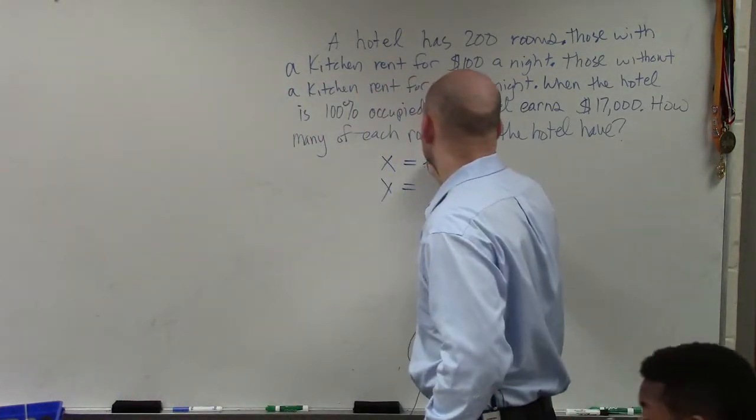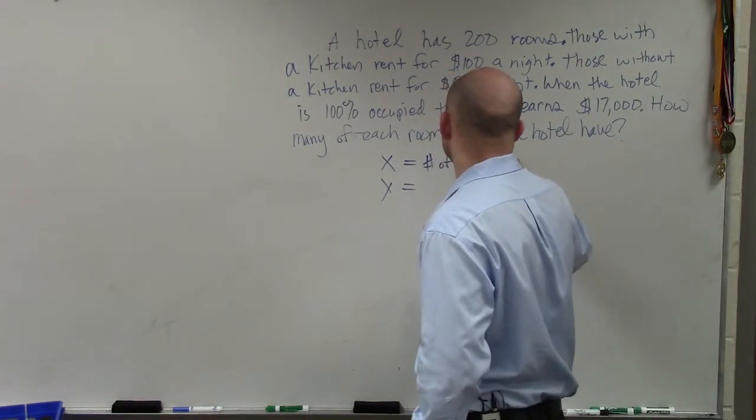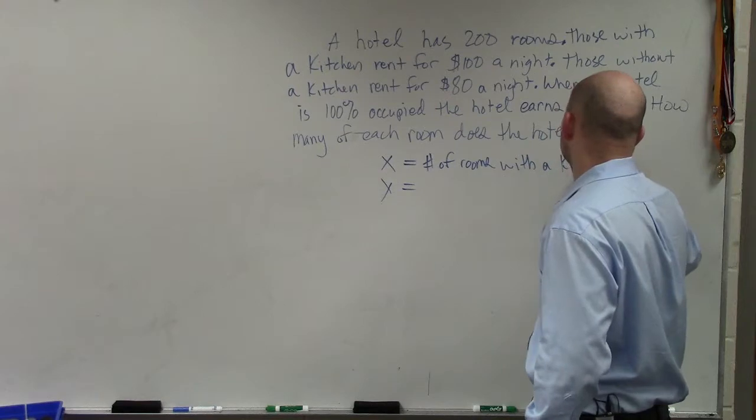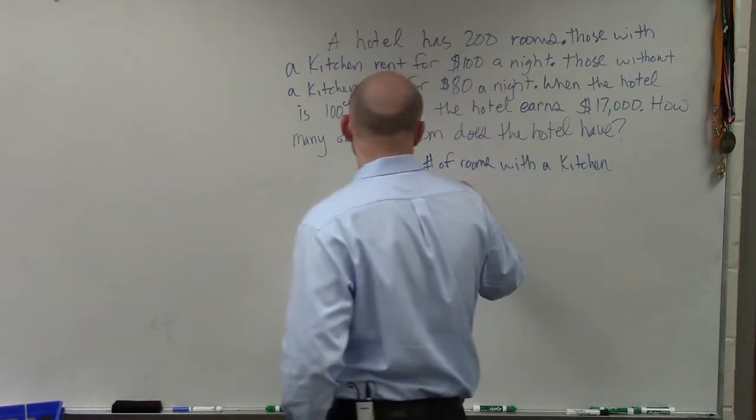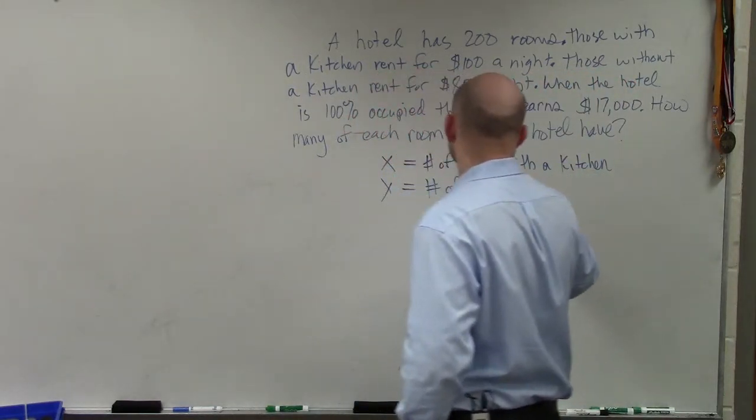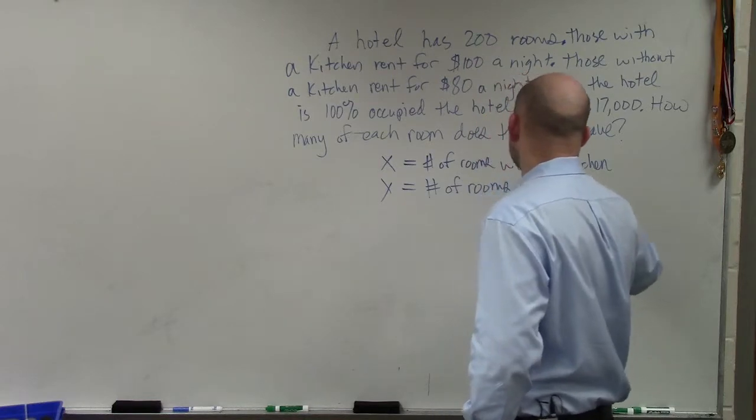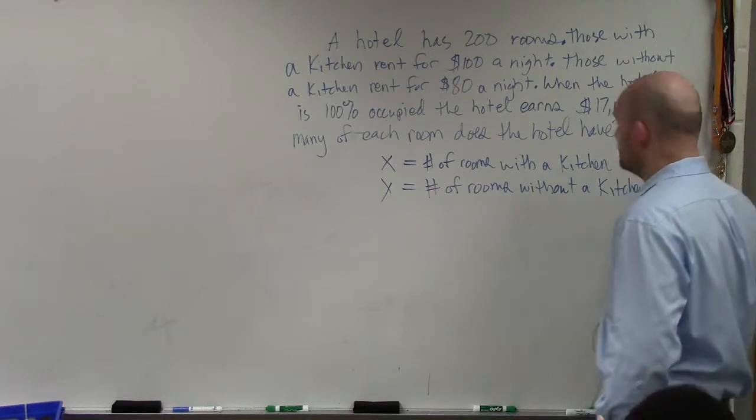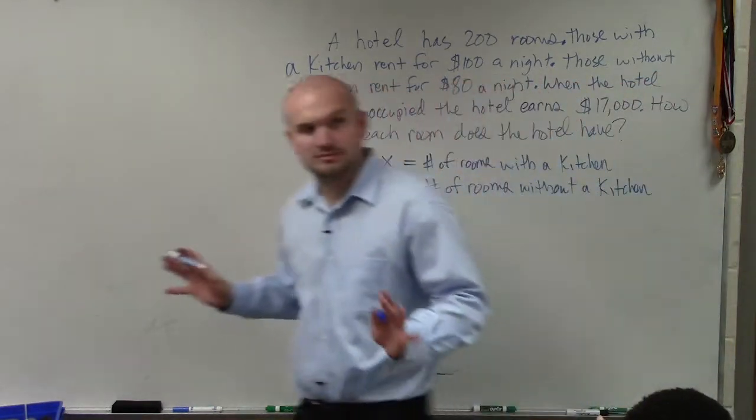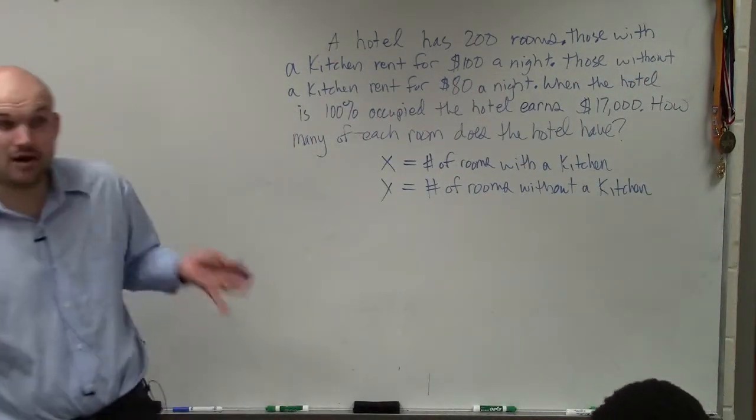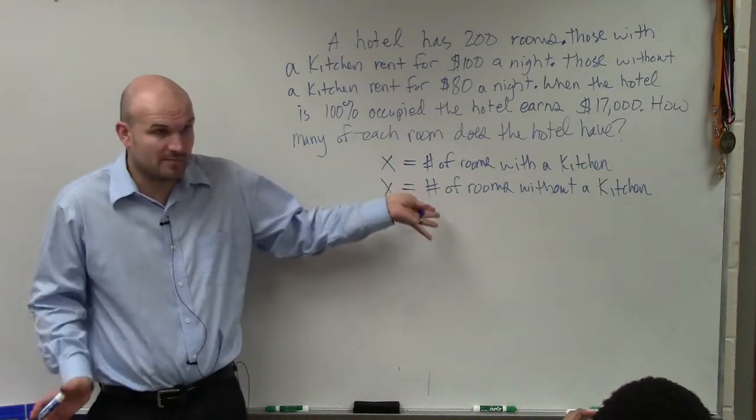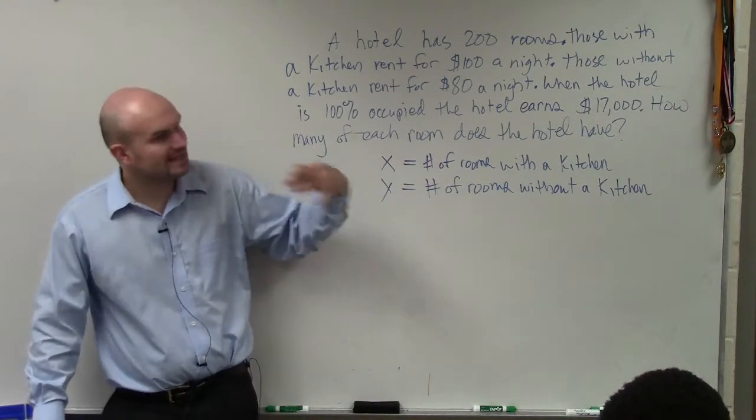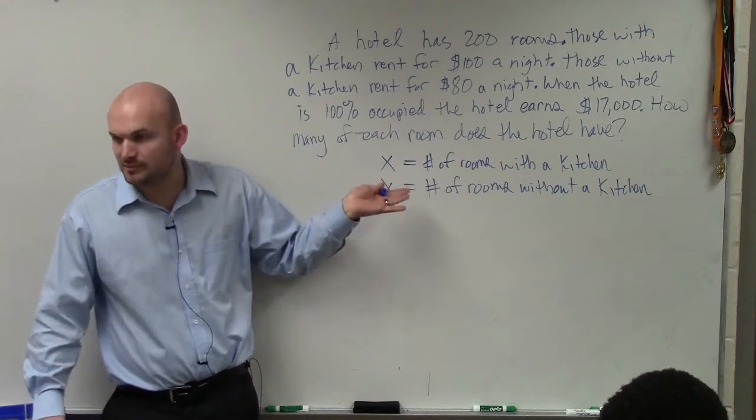So I can say x equals the number of rooms with a kitchen, and y equals the number of rooms without a kitchen. Does that seem pretty simple enough? We need to know how many, so that's why I want to know the number. That's what we're trying to figure out. But the thing, guys, the whole key to be able to solve this is identifying your variables.